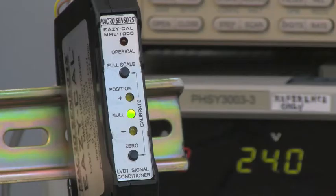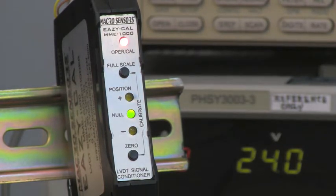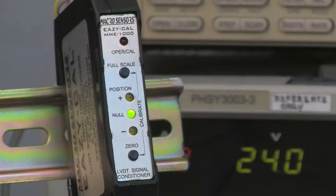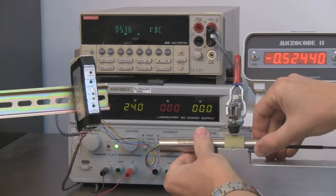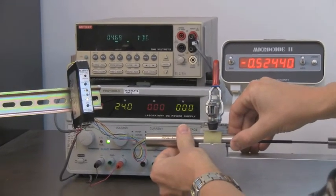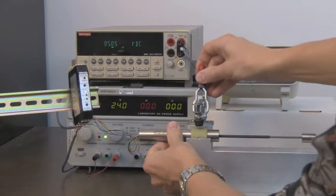When perfectly centered, the null LED indicator lamp will be steadily illuminated, meaning that the LVDT is at the center of its total stroke or at null. We then position the coil in the test fixture as closely as possible to null and lock the coil in place.